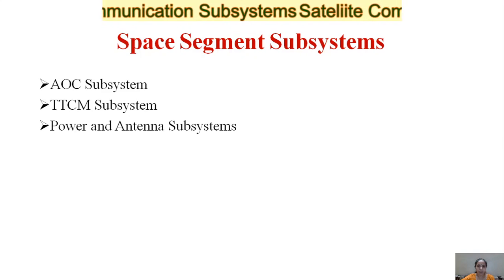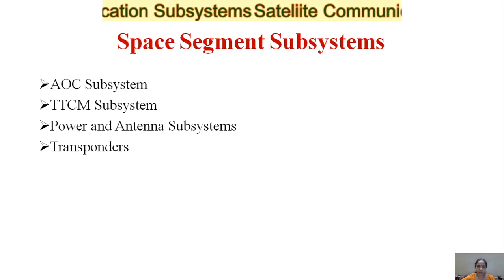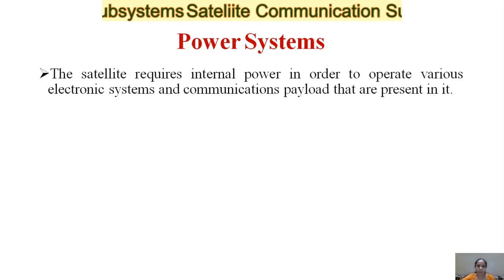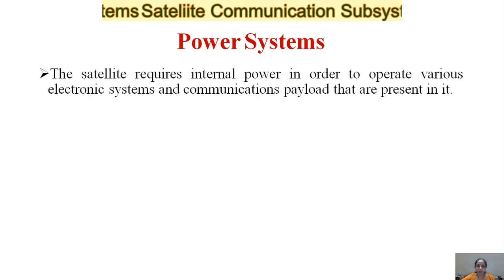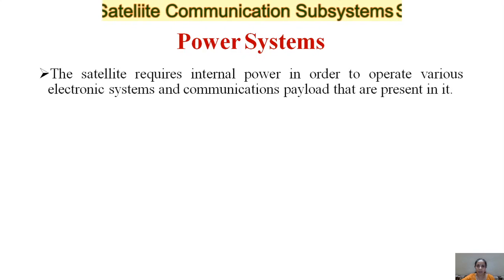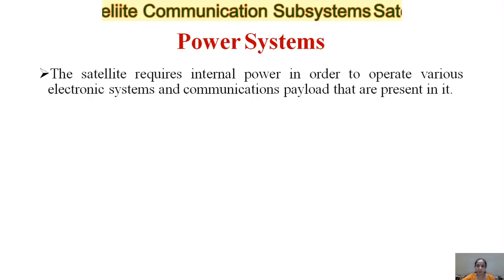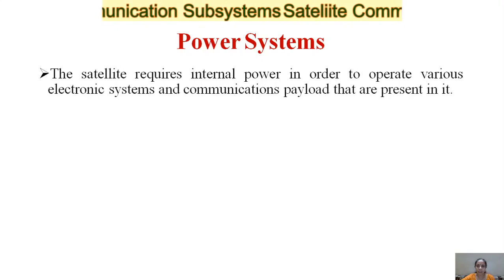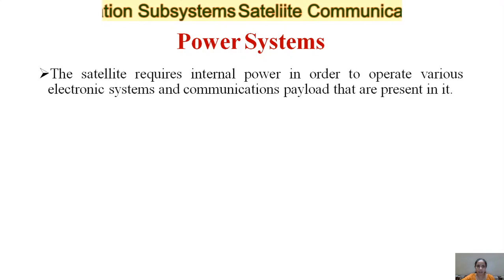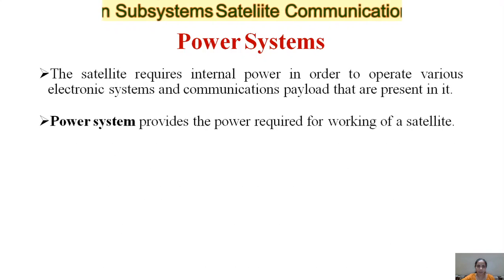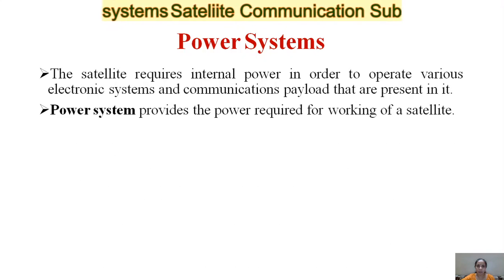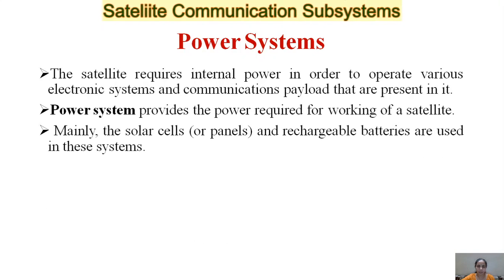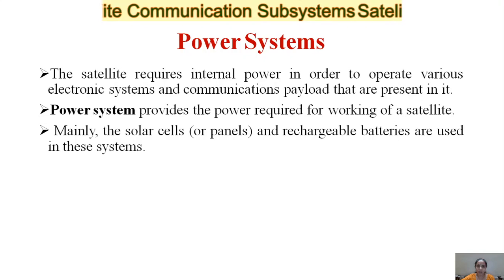Now in this video we will see power and antenna subsystems and the transponders. For satellite functioning, it requires internal power in order to operate various electronic systems and communication payload present in it. The power system provides the power required for working of a satellite.